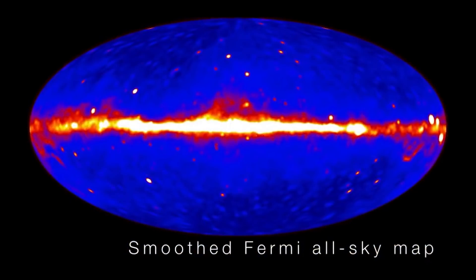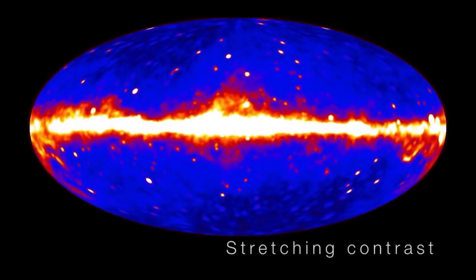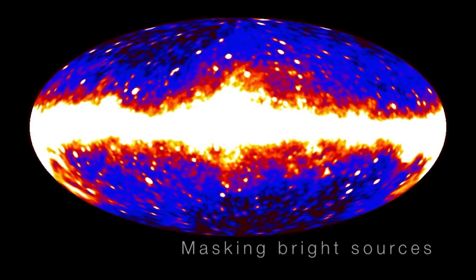These bubbles are the remnants of a powerful explosion that came from the supermassive black hole at the center of our very own galaxy, an explosion that life forms on Earth, maybe even our ape-like ancestors, may have witnessed 3.5 million years ago.